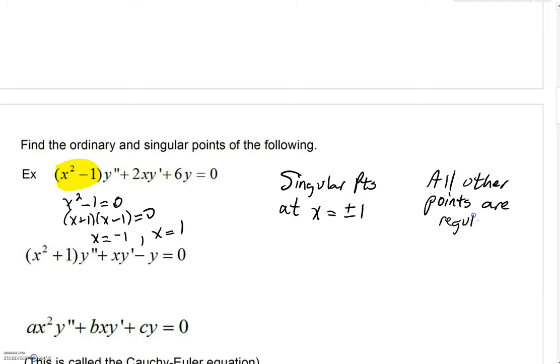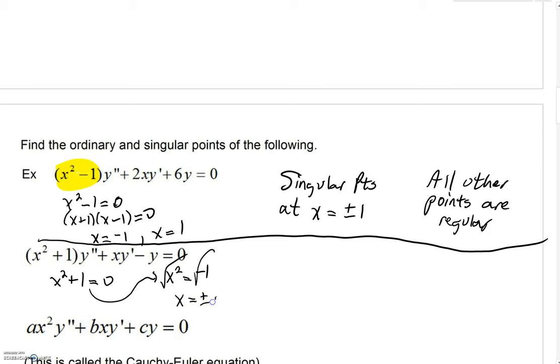We can take a look at this next example. Now our a sub 2 of x is x squared plus 1. You could say that doesn't factor, certainly not over the reals. But we could solve. We could subtract a 1, take our square roots, and it will not take you long to see plus or minus i. So if we were solving over the complex numbers, we'd see that we'd have singular points at these imaginary numbers. All other points are regular.